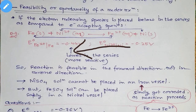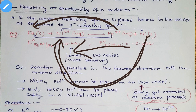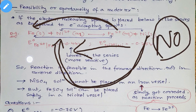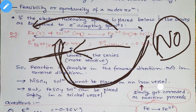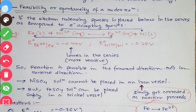But is the reaction feasible in the backward direction? Backward direction means: can iron two-plus change back to iron, and can nickel change to nickel two-positive? The answer is no. Because iron is placed lower in the series than nickel — iron is more reactive than nickel. So nickel cannot change to nickel two-positive under these conditions. Hence the backward reaction is not feasible; it is not possible. Only the forward reaction is possible.